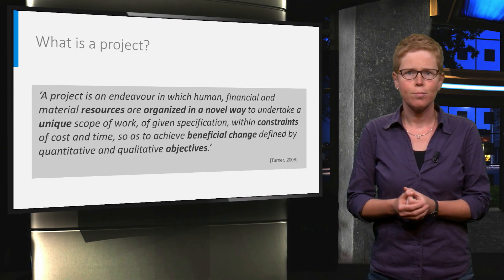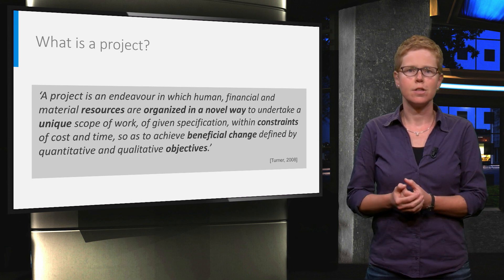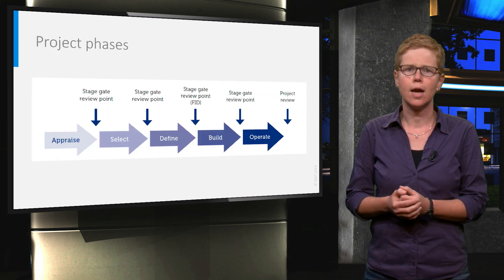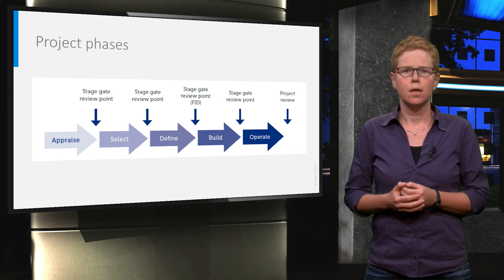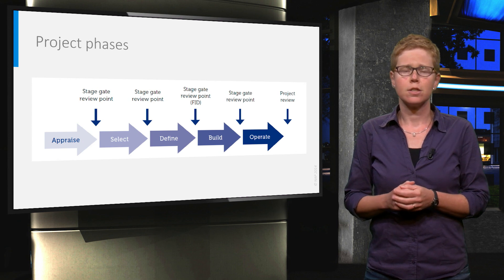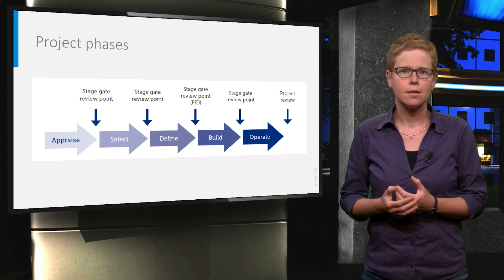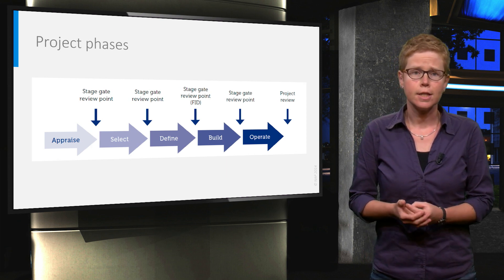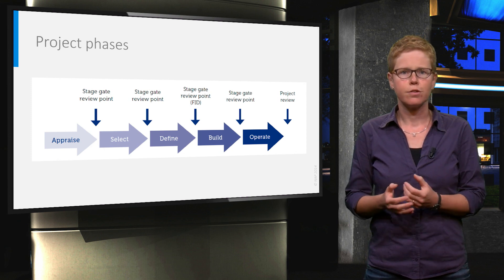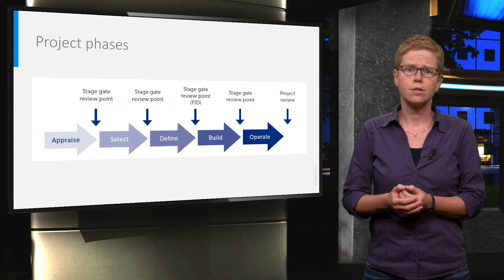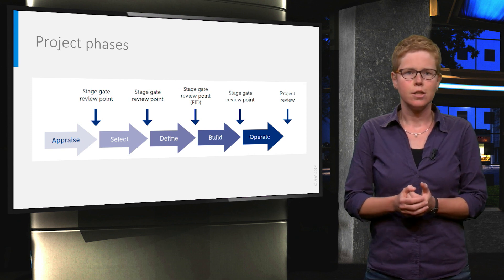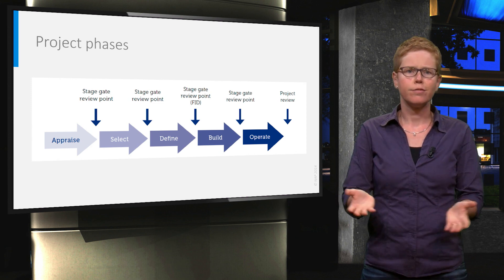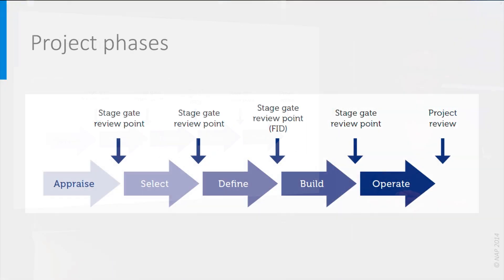Whatever the unique character of a project is, it will always have a number of distinct phases. A typical project life cycle consists of several phases. In the first phase, a potential future project is identified, the potential value is assessed and the alignment with the business strategy is verified. In the second phase, different options are investigated and a preferred solution is selected. In the third phase, the project is defined in more detail and funding needs to be obtained. These three phases together — appraise, select and define — are called the front-end development phase of a project.